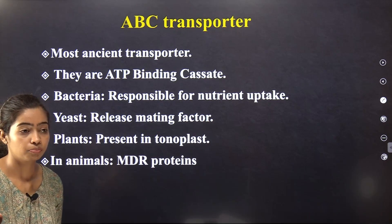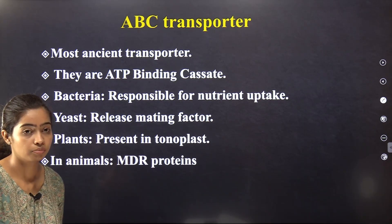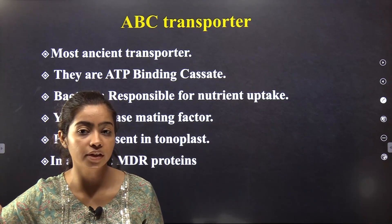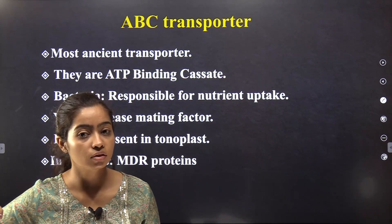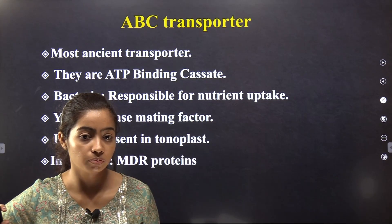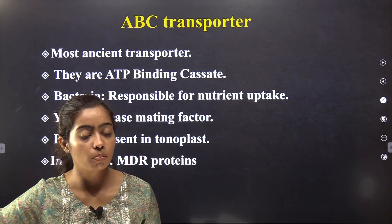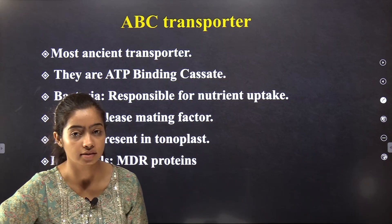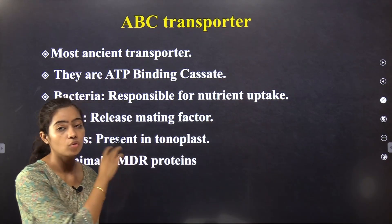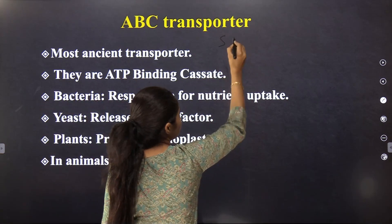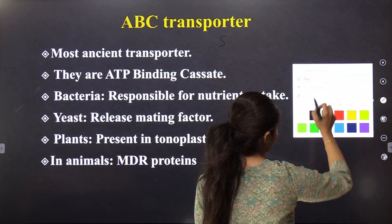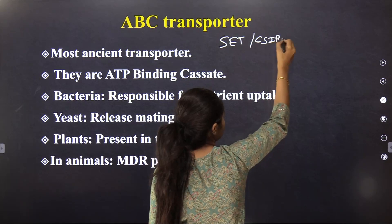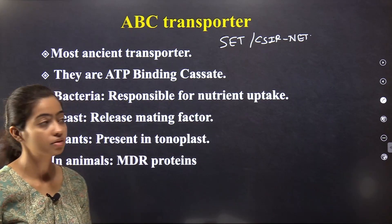The next topic is the ABC transporter, which is the fourth point of the primary active transporters. This is an important topic for both SET and CSIR NET exams. ABC transporters are the most ancient transporters — they arose before any type of domain, present in bacteria, archaea, and eukaryotes.